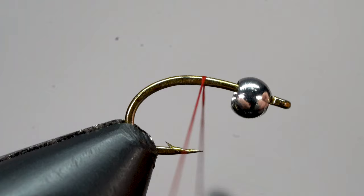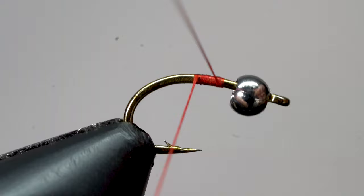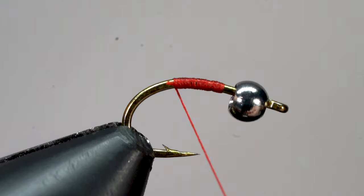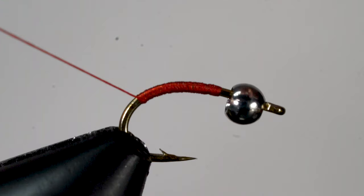And then we're going to attach some thread using a jam knot. This is done by wrapping a few times forward and then wrapping the thread back over itself a few more times. Then grab your good tying scissors and we're going to snip off that extra thread. Now that that thread's not going anywhere, we're going to lay down a nice even thread base all the way back to about halfway down the bend of the hook.